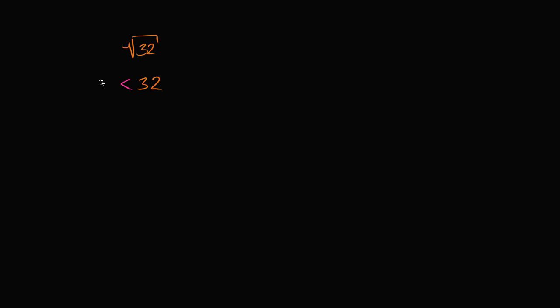So maybe I should write it this way. So 5 squared is less than 32. And then 32, what's the next perfect square after 32? Well, 32 is less than 36. So we could say 32 is less than 6 squared. So if you were to take the square root of all of these sides right over here, instead of having all of the values squared, if we took the square root, we could say 5 is going to be less than the square root of 32, which is less than 6.